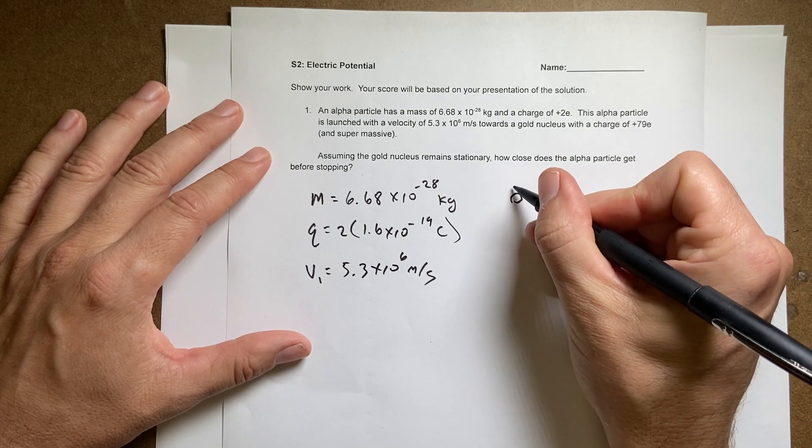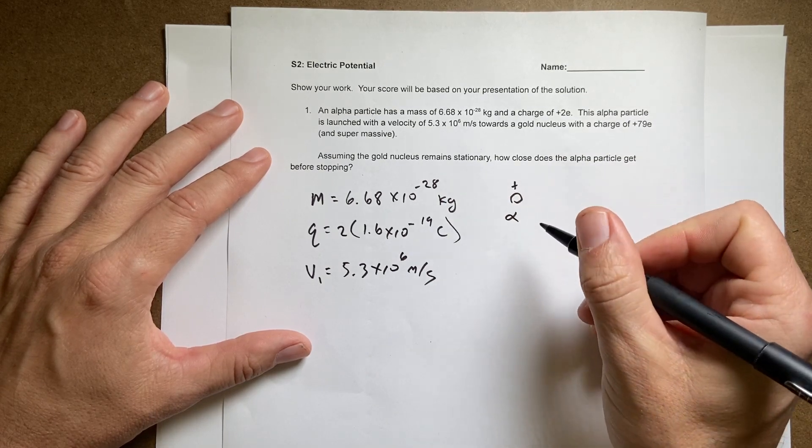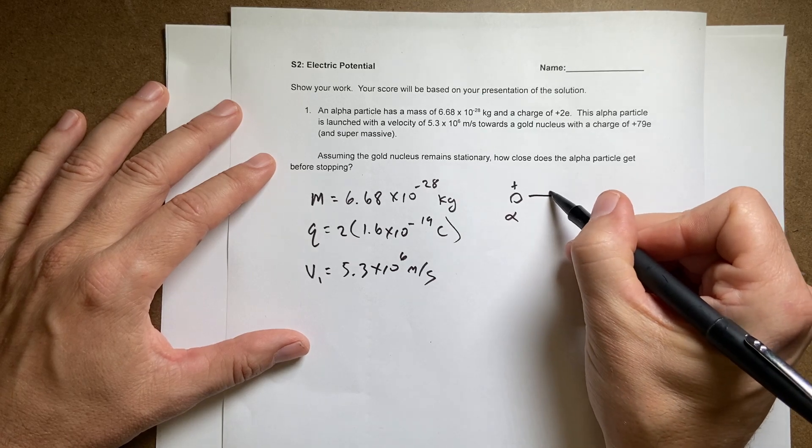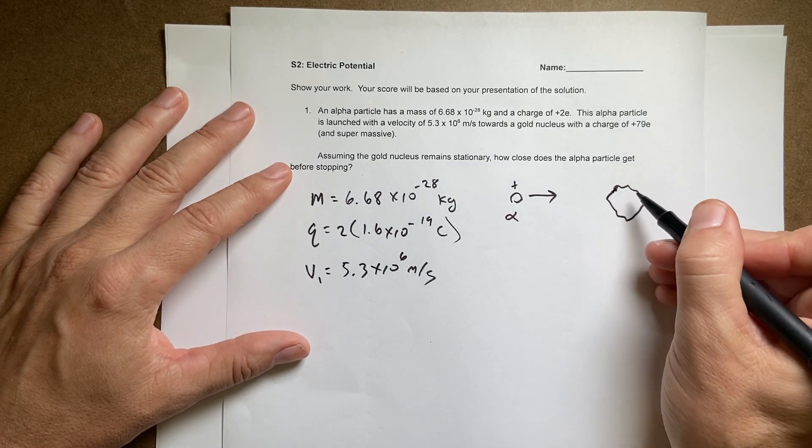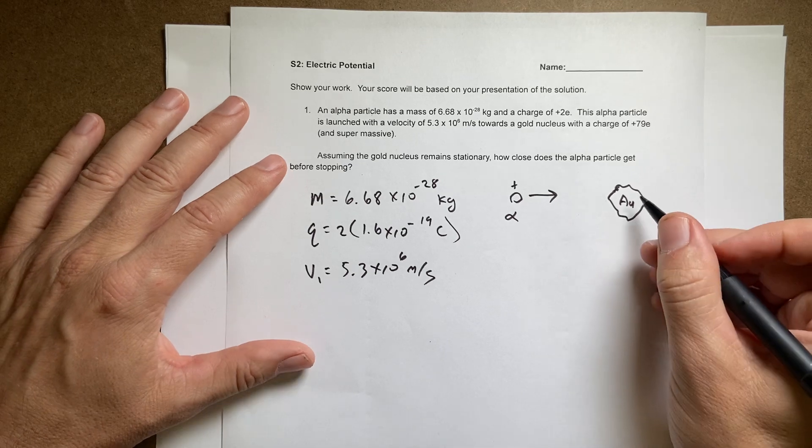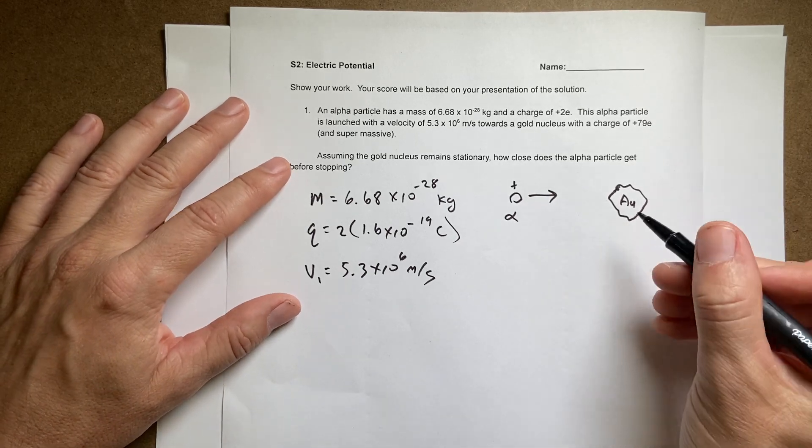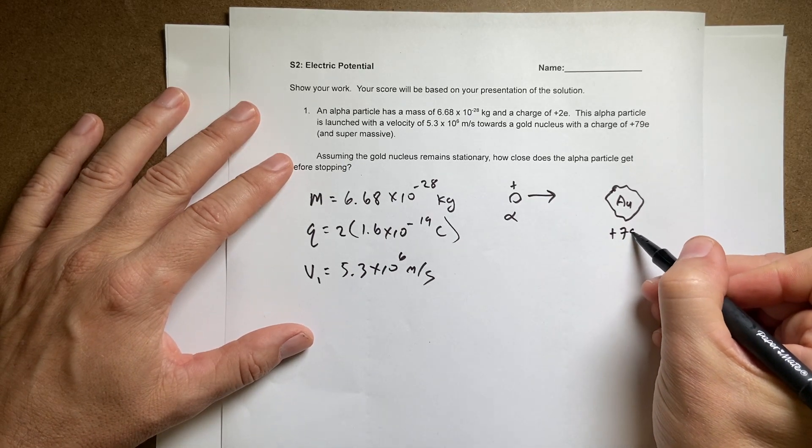So here I have my positive alpha particle. That's the symbol for alpha. It's moving this way and then here's my much bigger Au, which is gold, gold nucleus and this is plus 79 e.